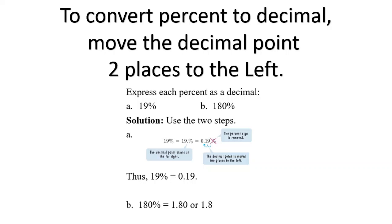Then in 180%, again, there's no decimal point given in that percentage, so it's behind the last number 0. So move that decimal point two places to the left, and that would be 1.80 or just 1.8.